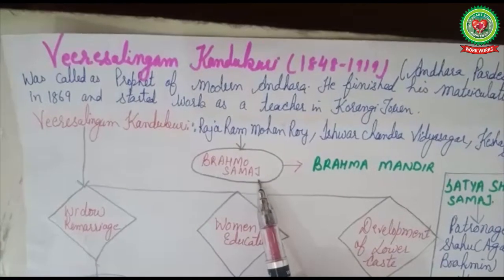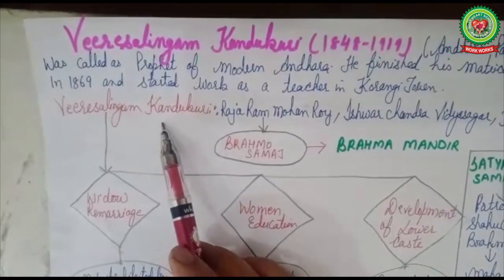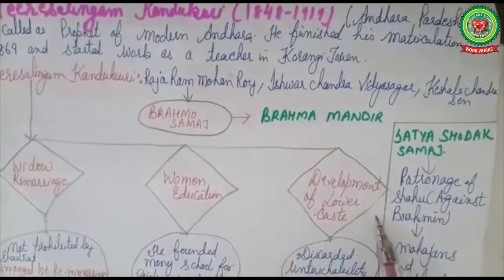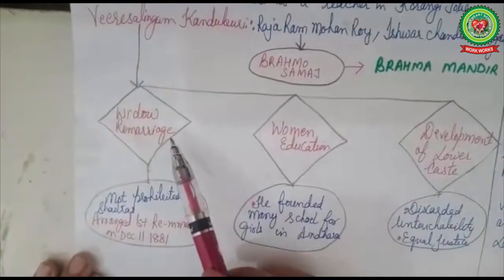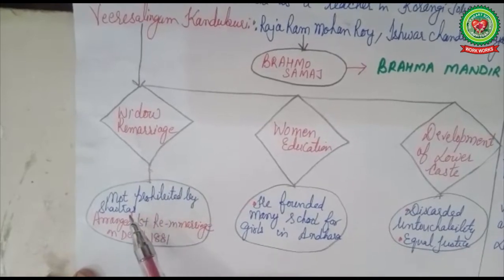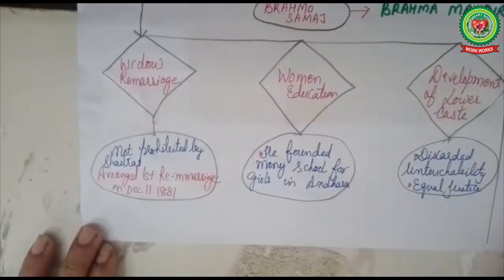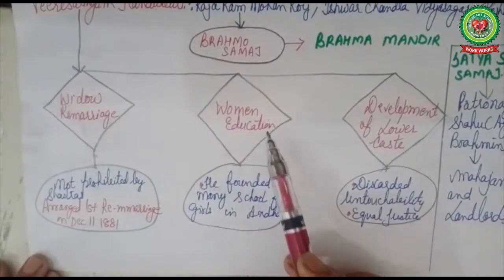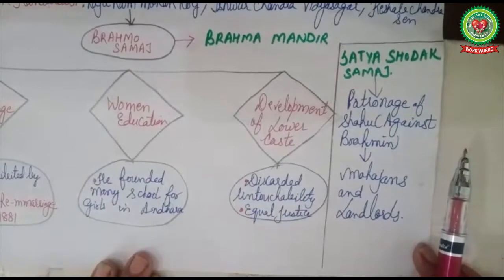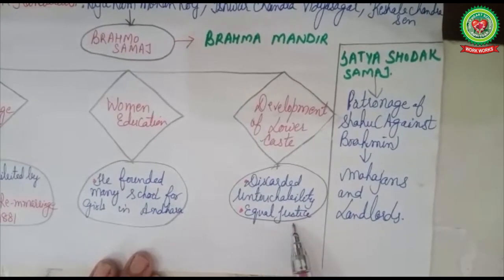Varisalingam Kandukuri was inspired by the philosophy of Raja Ram Mohan Roy, and to draw inspiration from Roy's Brahmo Samaj, he set up a Brahma Mandir in Andhra Pradesh. He contributed in the fields of widow remarriage, women's education, and development of lower castes. He said widow remarriage was not prohibited by the shastras or Hindu scriptures, and arranged the first widow remarriage on December 11, 1881. He also founded many schools for girls and rejected untouchability, advocating equal justice and opportunities for all.